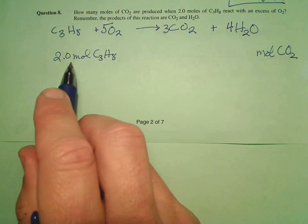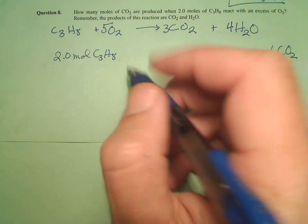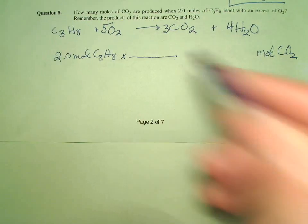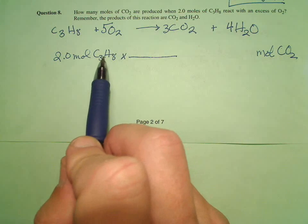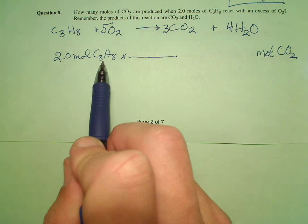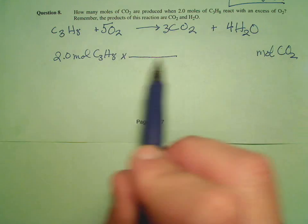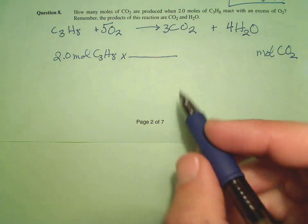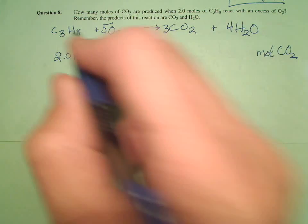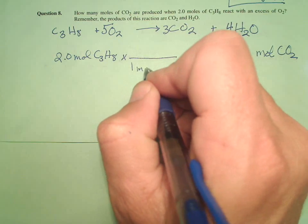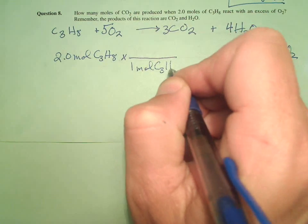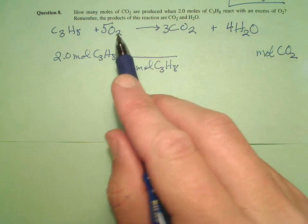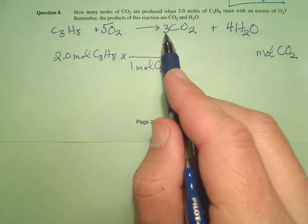It's already in moles. Remember, my first job is to get it in moles - well, it's already there. So now I'm ready for my mole-to-mole ratio. I know the mole-to-mole ratio has to go between propane and CO2, because that's what the question is. I look at my balanced equation and say, hey, one mole of propane produces 3 moles of CO2.